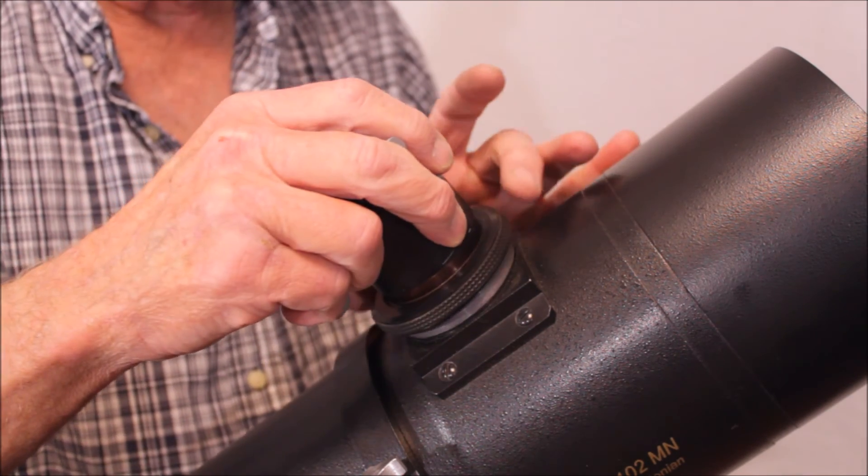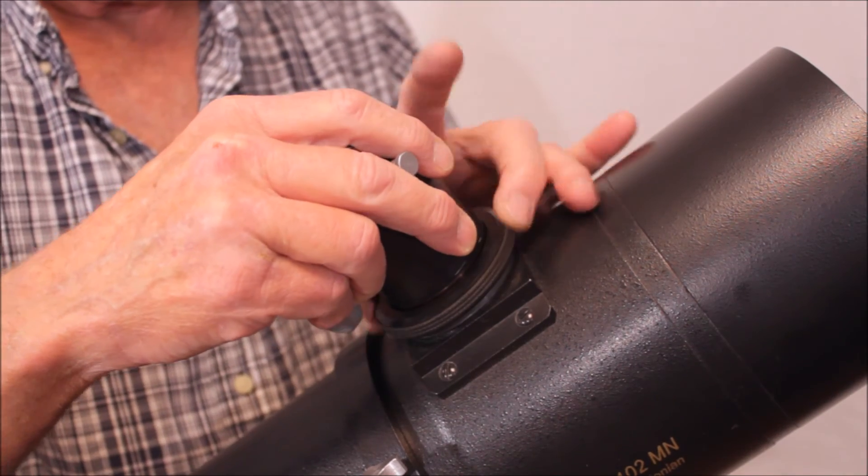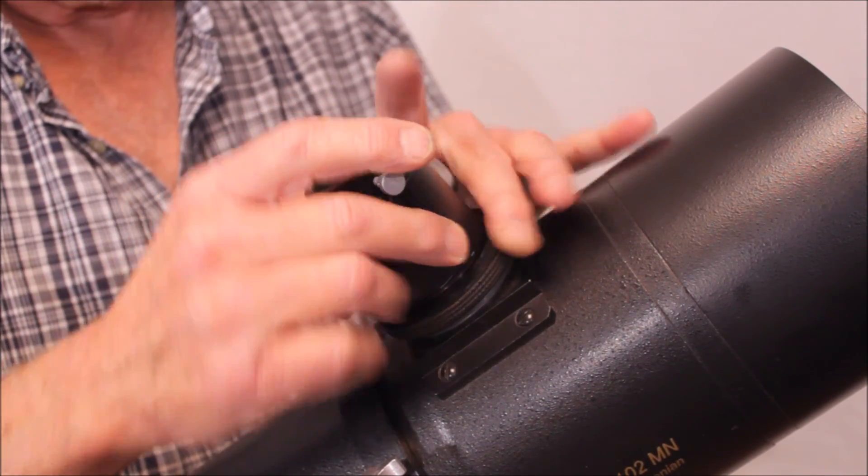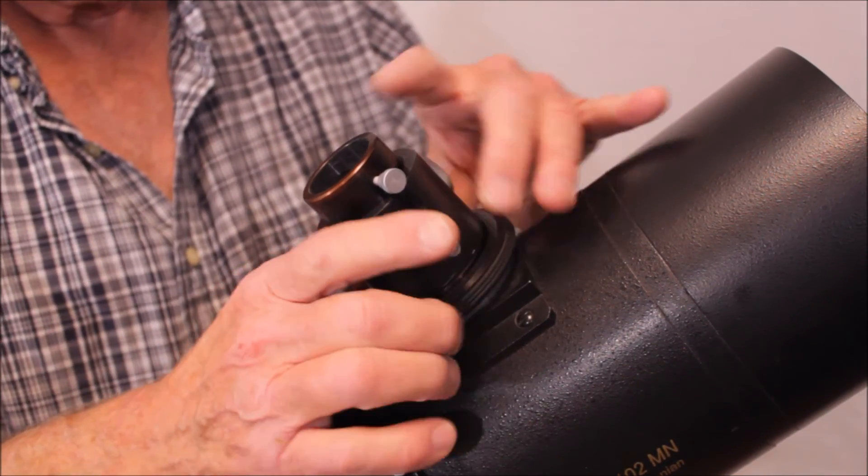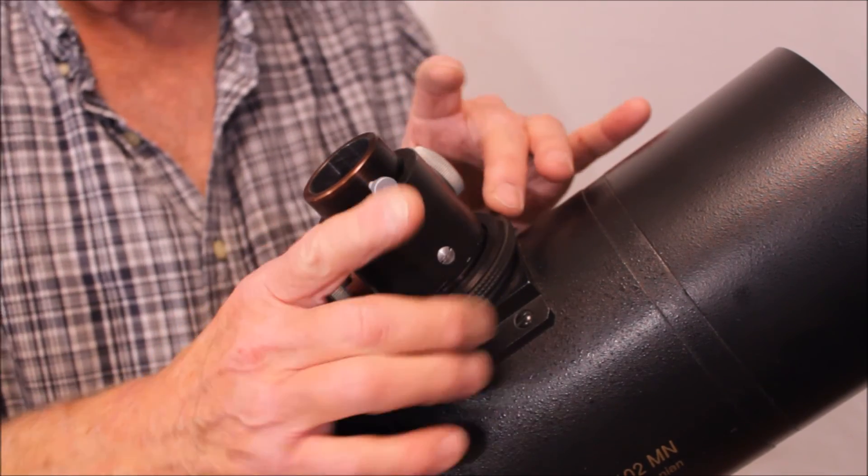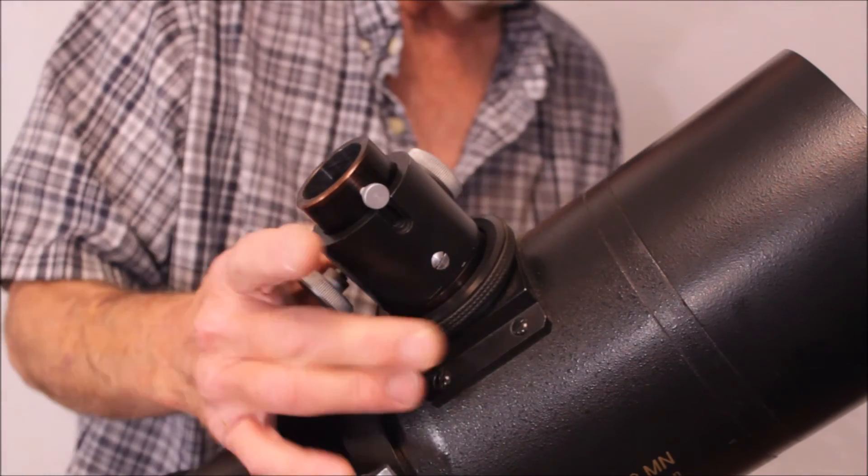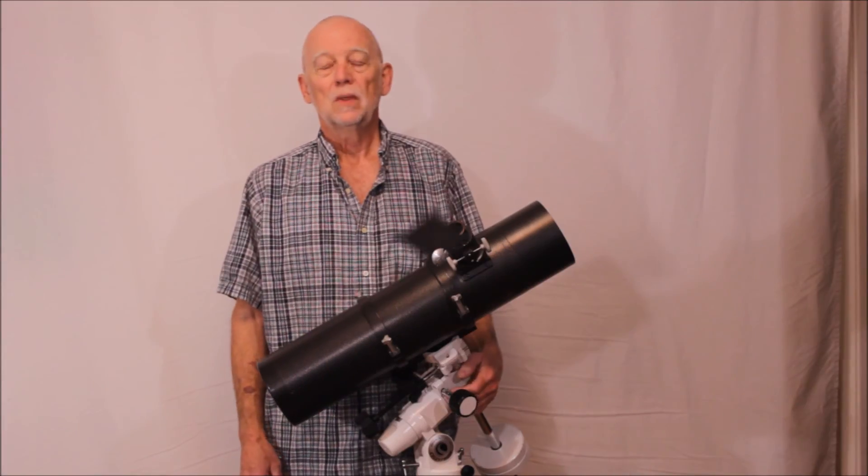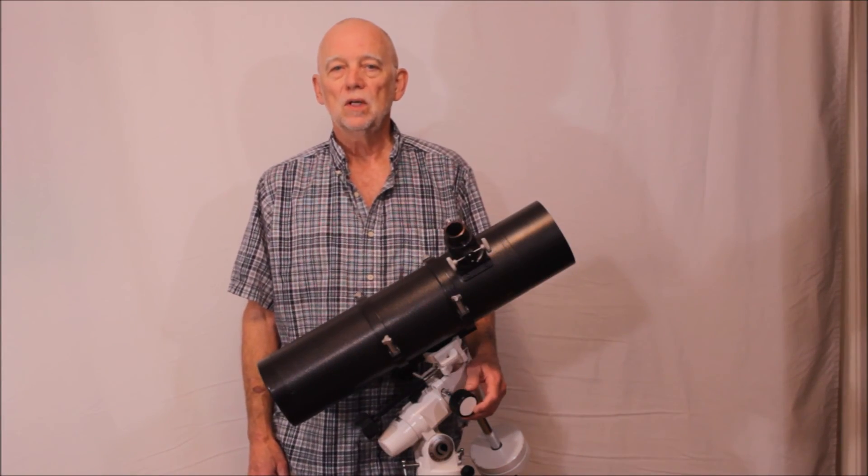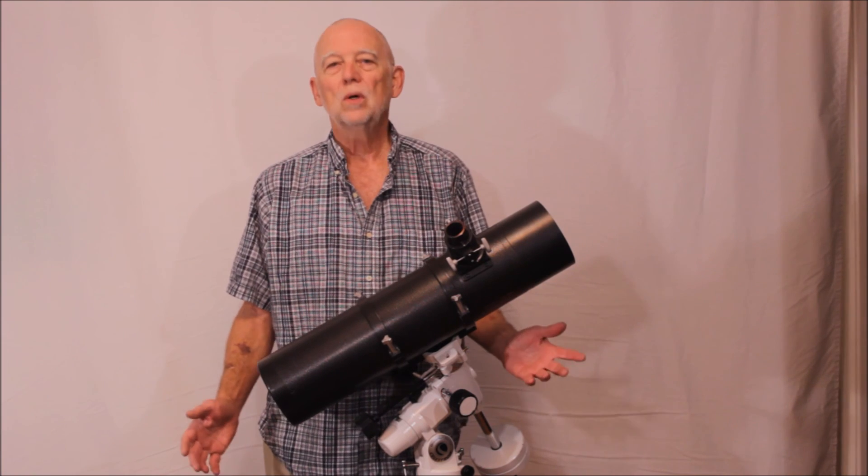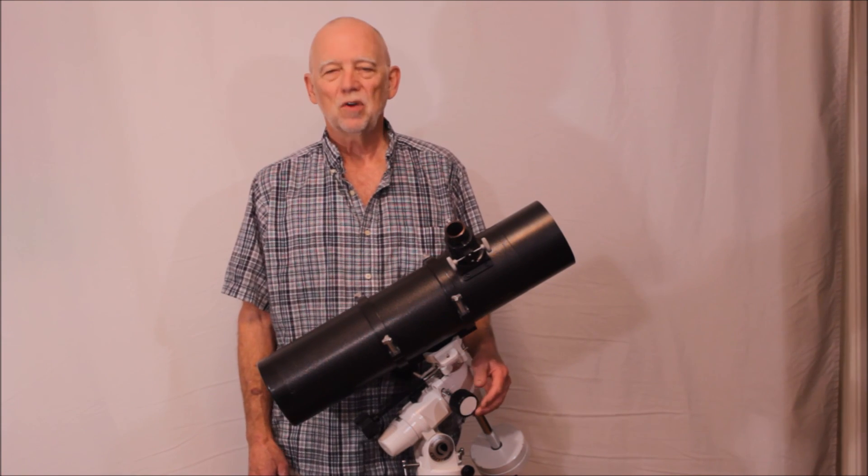You'd probably make a superb astrograph. These, a Maksutov-Newtonian, is a really good wide field astrograph. Very good flat field, almost as good as a Ritchey in those terms. I hope you've enjoyed my tour of this LOMO Estelle 102MN telescope. Thank you very much for watching.